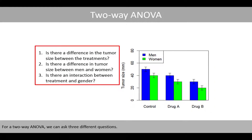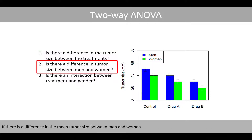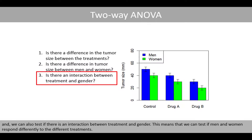For a two-way ANOVA, we can ask three different questions. In this example, we can test if there is a difference in the mean tumor size between the three different treatments, if there is a difference in the mean tumor size between men and women, and we can also test if there is an interaction between treatment and gender. This means that we can test if men and women respond differently to the different treatments.